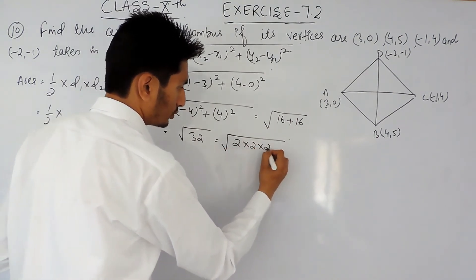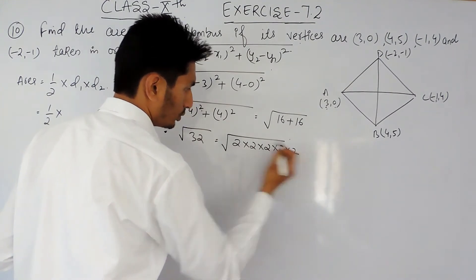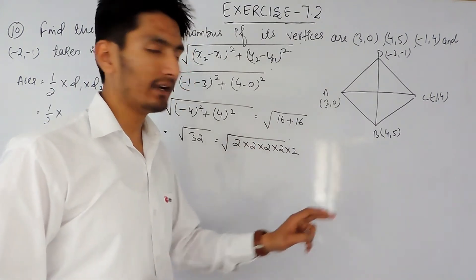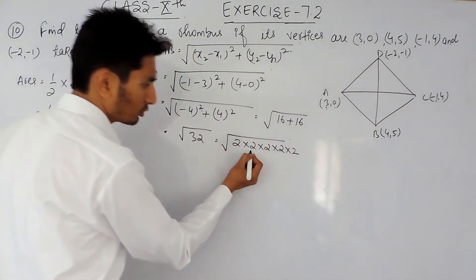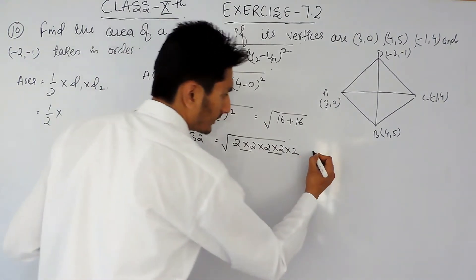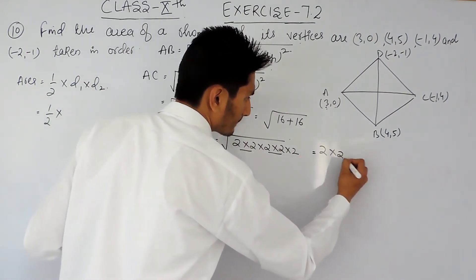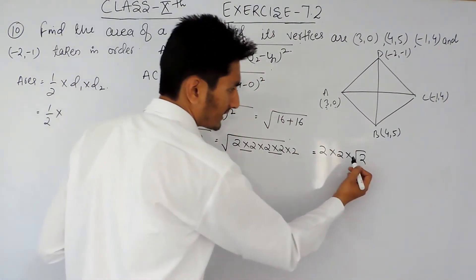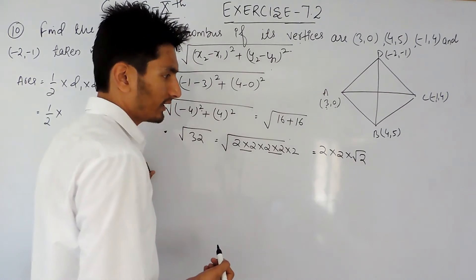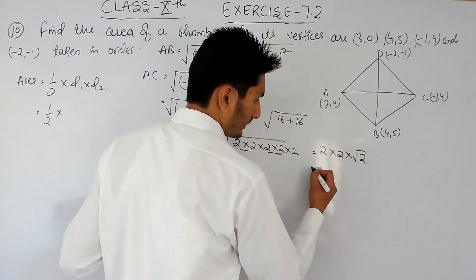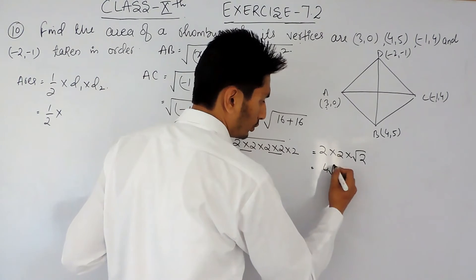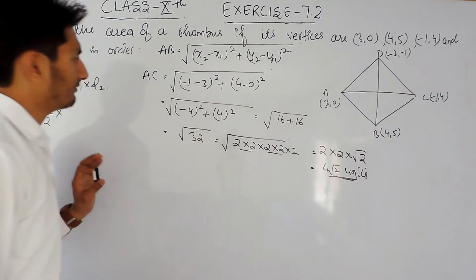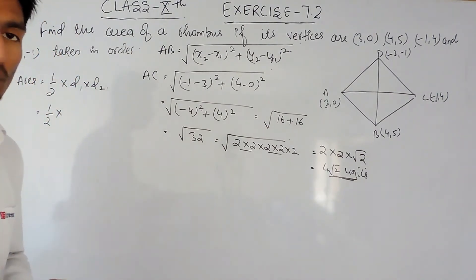Now 32 can be written as 2 to the power 5. Taking one number out from each pair inside the root, only 2 remains inside. So outside we get 4, giving us 4 root 2 units. So the length of our first diagonal AC is 4 root 2 units.